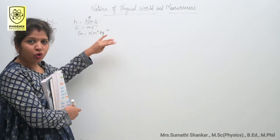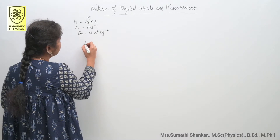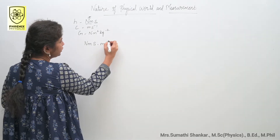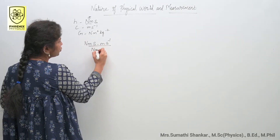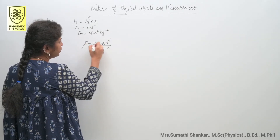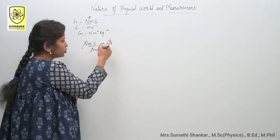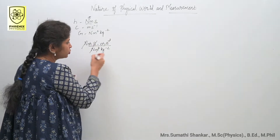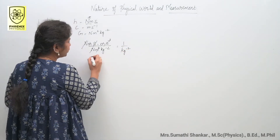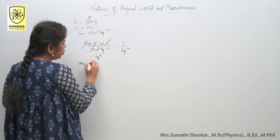Just substitute all the units into hc/g. We get newton meter second times meter per second, divided by newton meter square kilogram minus 2. Here meter and meter cancel, and s⁺¹ and s⁻¹ cancel. So the final answer is 1 by kg⁻², or you can write it as kg². The answer is option A.